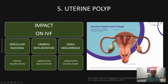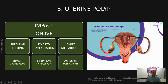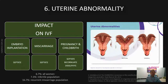The main impact of uterine polyp is failed implantation and early miscarriages. Small polyps do not impact implantation significantly. Any polyp more than one centimeter can have a significant impact, and it is recommended to remove the polyp before embryo transfer.